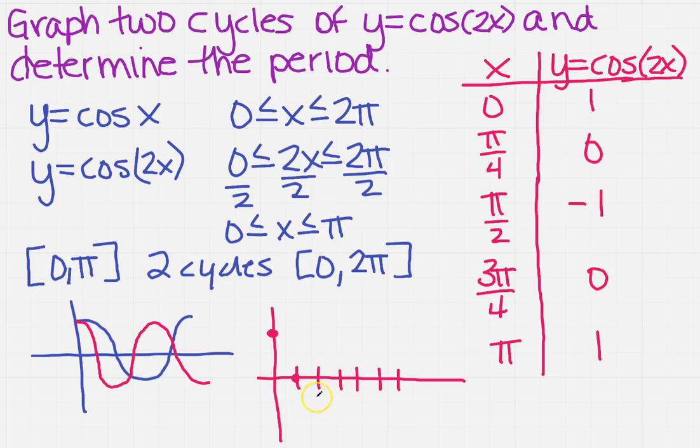At π/2, I'm going to be at negative 1. And then at 3π/4, I'm coming back to 0. And then at π, I'll be back up here at 1. So here's what one cycle looks like.